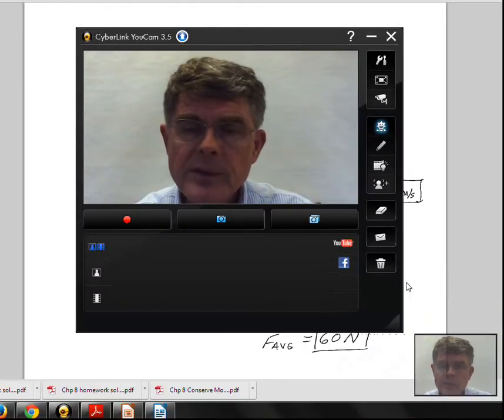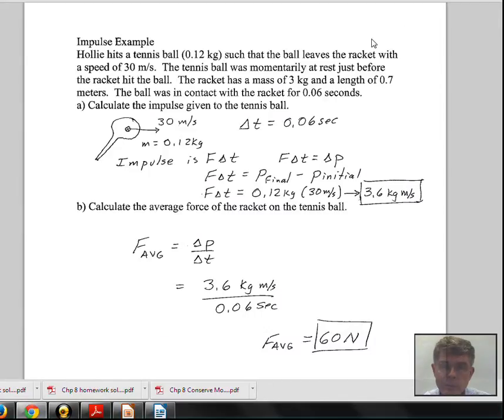This video will do an example of impulse in the chapter related to momentum conservation. Let's suppose a person has a tennis ball coming into the racket and leaving the racket. The tennis ball is going to have a mass of 0.12 kilograms. The ball leaves the racket with a speed of 30 meters per second.